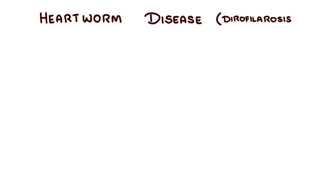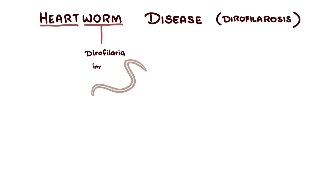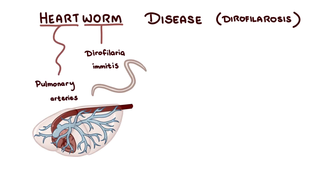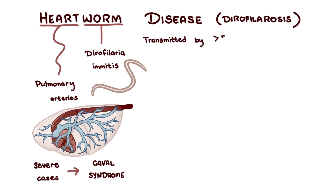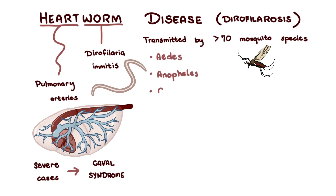Heartworm disease — 'heart' is a slight misnomer because the worm, Dirofilaria immitis, prefers to stay in the pulmonary arteries. Only in very severe cases, when there are a lot of worms, do they occupy the chambers of the heart and sometimes push into the great veins, known as Caval syndrome. The parasite is transmitted by over 70 species of mosquitoes, but the most common ones are Aedes, Anopheles, and Culex.